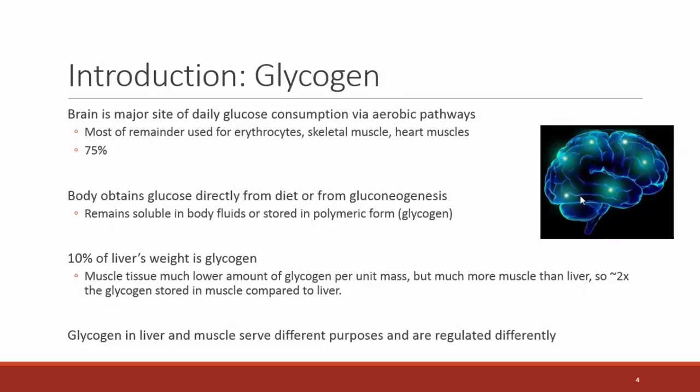Glycogen is important because it allows our body to have a constant source of glucose — stored and available when we need it. Glucose itself is important because many parts of our body rely heavily on it, especially our brain, which uses 75% of glucose consumption during the day. The remainder is used by red blood cells, which can only use glucose for energy, and skeletal and heart muscles. The body can get glucose directly from the diet, or make it from other macronutrients such as amino acids — a process called gluconeogenesis.